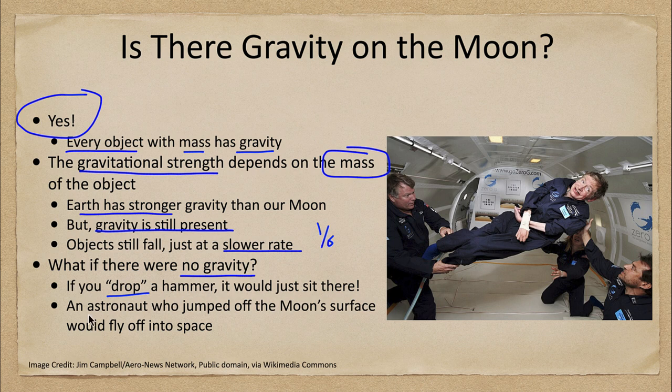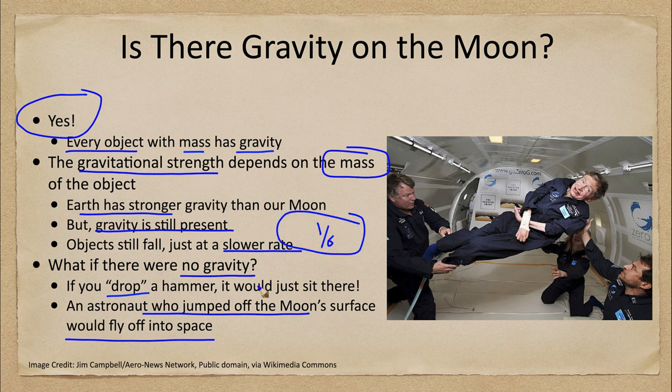Another difference would be, for example, if an astronaut were to jump off the Moon with no gravity, they would simply fly off into space. But you'll see that they can jump up and they'll come back down. They can jump much higher because of the lower gravity on the Moon. But it does not mean that there is no gravity — just a lesser gravity, in fact about one sixth the amount that we have here on Earth.